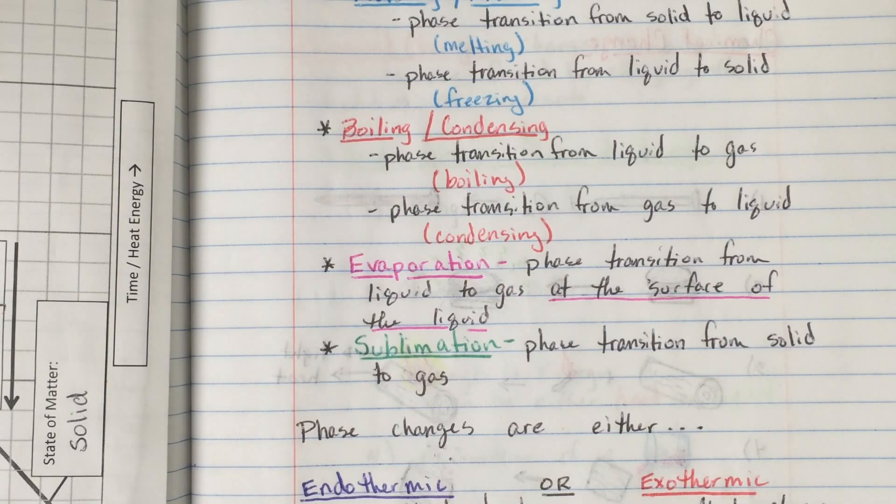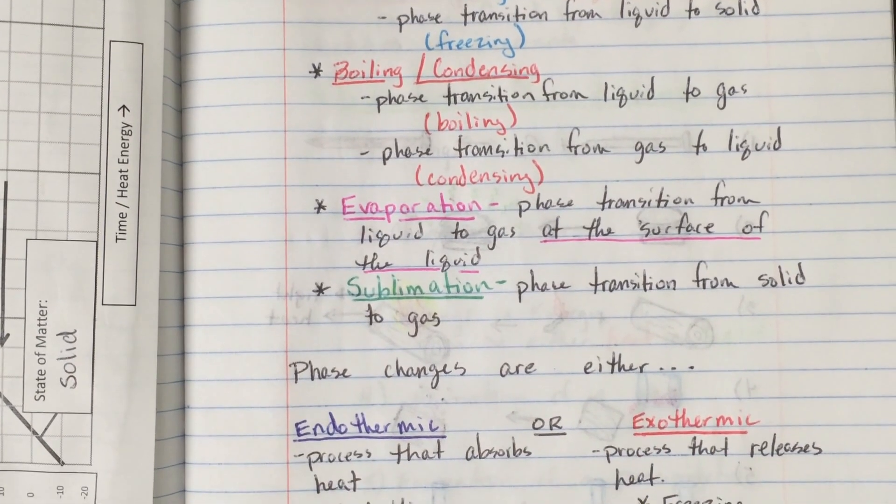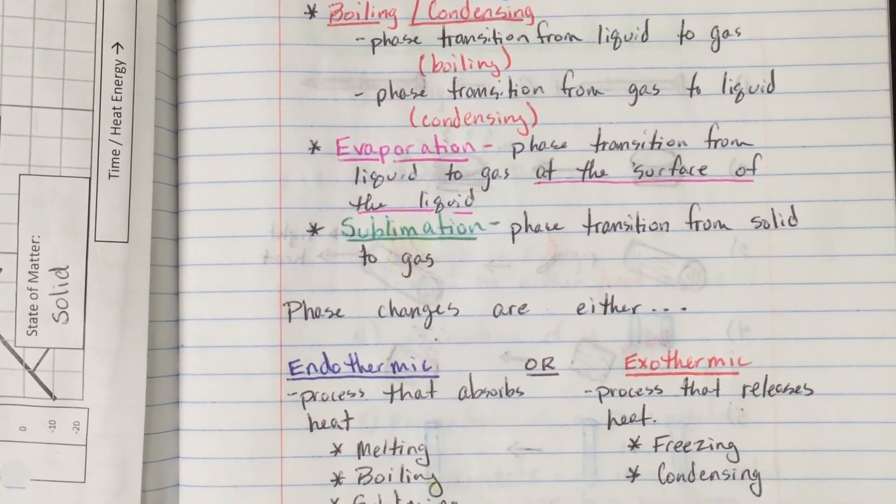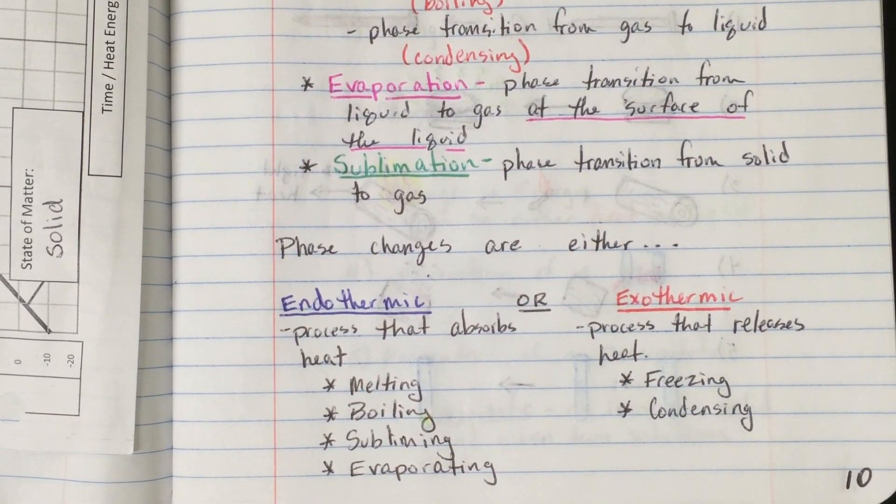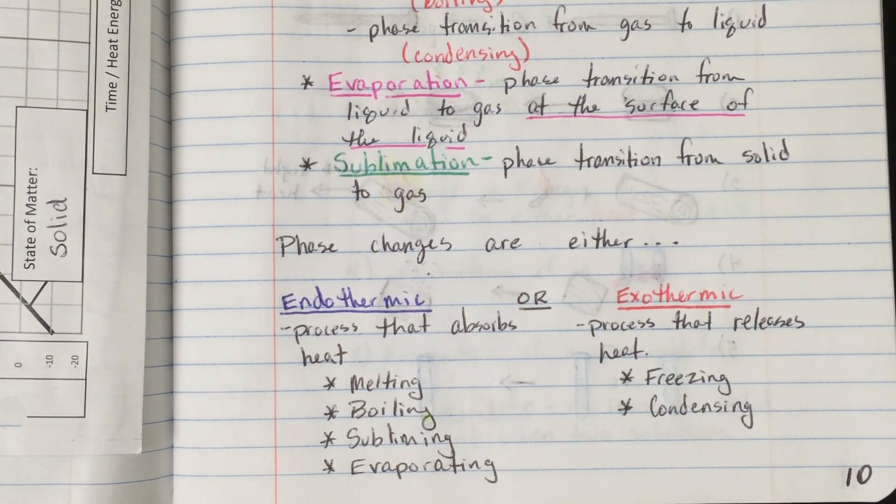And then the last one that we talked about in class was sublimation. Sublimation is a phase transition from a solid to a gas, skipping the liquid phase entirely. And this is exactly what dry ice, or frozen carbon dioxide, does at room temperature. It sublimes. You'll notice it goes from the solid phase to the gaseous phase instantly, and it skips the liquid one completely.